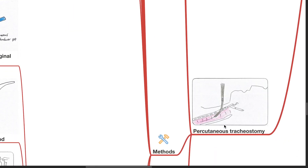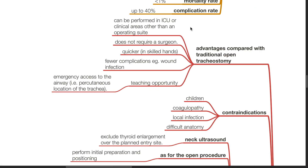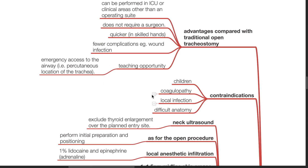Percutaneous tracheostomy: advantages compared with traditional open tracheostomy include that it can be performed in the ICU or clinical areas other than an operating suite, does not require a surgeon, is quicker in skilled hands, has fewer complications such as wound infection, and provides a teaching opportunity for emergency airway access. Contraindications include use in children, coagulopathy, local infection and difficult anatomy.